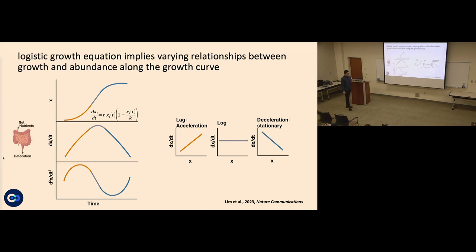The logistic growth equation is fairly simple: growth rate r, abundance at time t, multiplied by 1 minus abundance divided by carrying capacity K. It describes self-limiting growth — organisms start at low abundance, grow exponentially, then taper off to a carrying capacity. If you look at first and second derivatives of this curve, you're maximizing rate of growth in the middle, positively accelerating at the beginning, and decelerating towards the end.